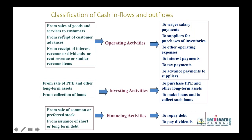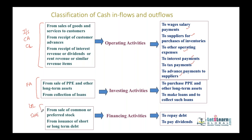Operating activities mainly concentrate on income statement items, changes in current assets, and changes in current liabilities — salaries, supplier payments, operating expenses, interest, tax, and advances to suppliers. Investing activities cover the fixed asset section of the balance sheet. Financing activities cover long-term liabilities and shareholders' equity. Retained earnings also go to financing activities for the payment of dividends. Income statement, retained earnings statement, and balance sheet together help us prepare the cash flow statement.